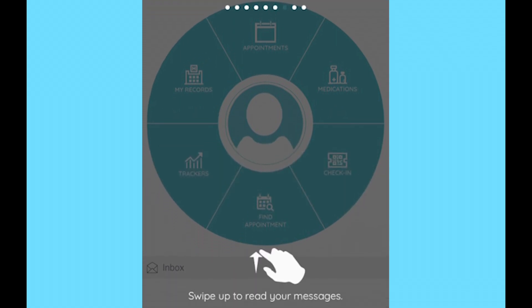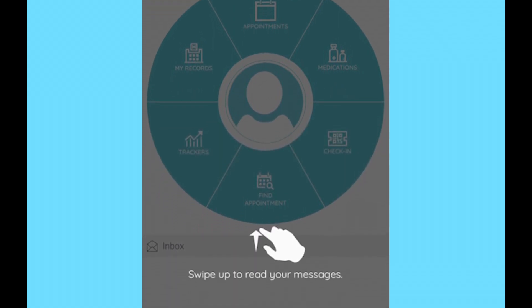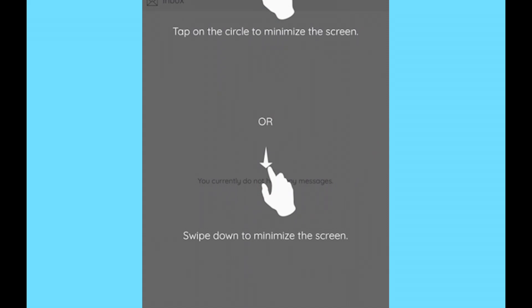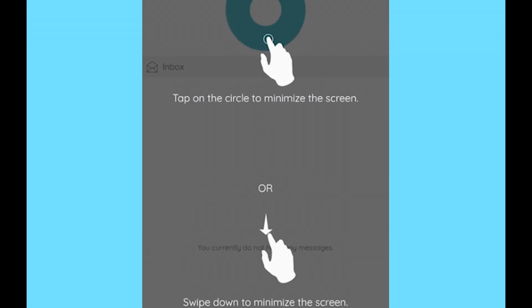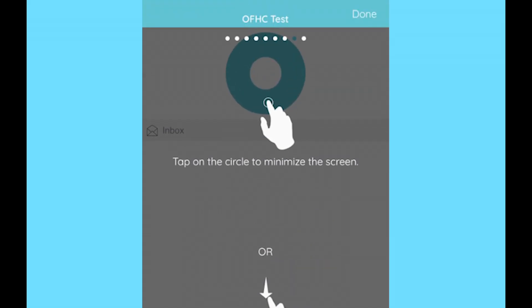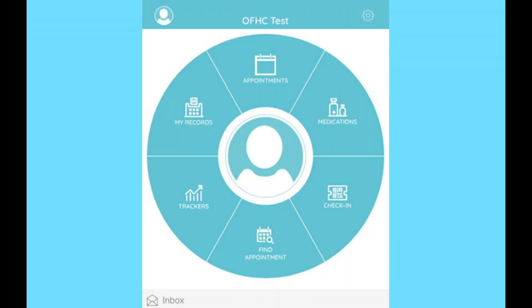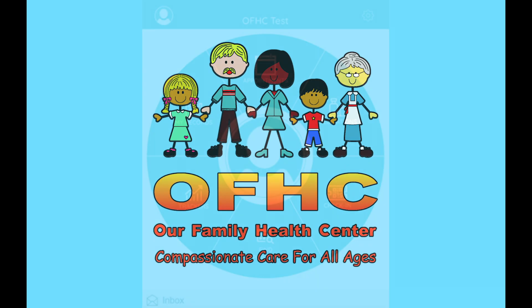Swipe up to read your messages. You can swipe down or tap on the circle to minimize the screen. Now that you're familiar with the layout, you can start enjoying all the ways the Hilo app lets you manage your healthcare. Thanks for watching.